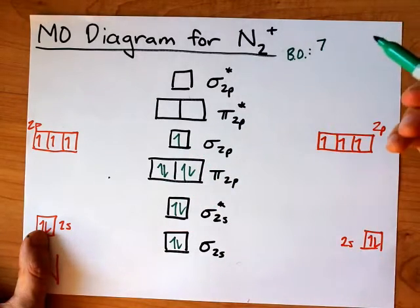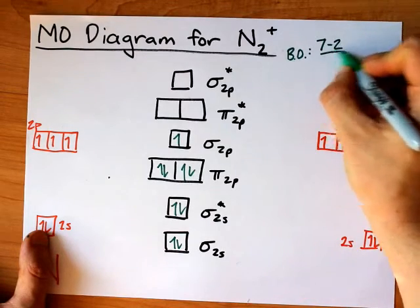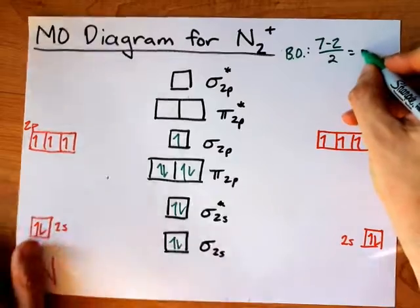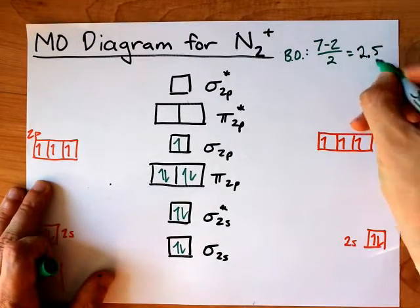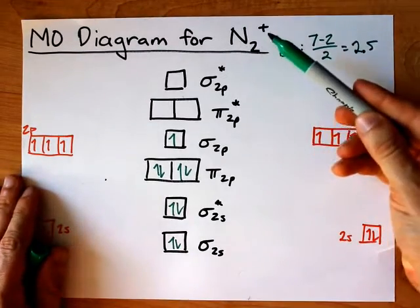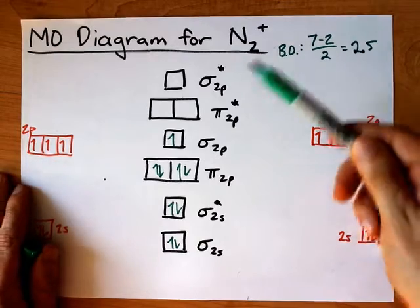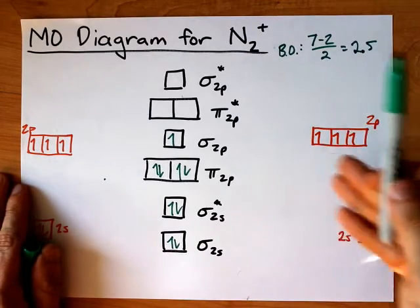minus the number of electrons in antibonding orbitals, that's 2, divided by 2, which makes 5 divided by 2, which is 2.5, which is not a whole number. And thus, the N2 plus 1 species is not a known dimer, or not a known stable species.